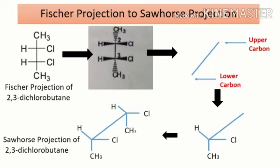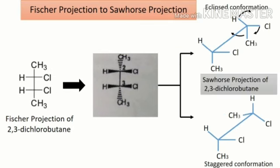Similarly, we can show the groups attached to the upper carbon. Now we have got the Sawhorse projection of 2,3-dichlorobutane — it is the eclipsed conformation, as every bond on one carbon is facing a bond on the other carbon. By rotating one of the carbons as shown, we can write another conformation, that is the staggered conformation of 2,3-dichlorobutane. This is how we can easily convert Fischer projection into Sawhorse projection.